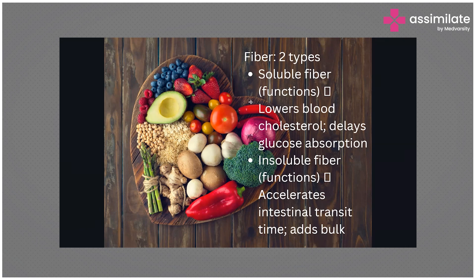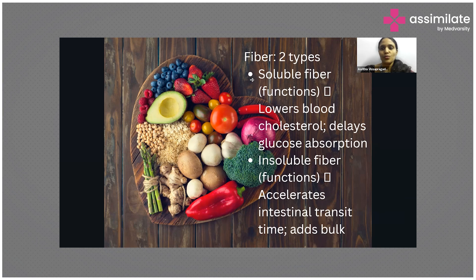Coming to fiber: fiber helps to clean the system. There are two types of fiber we get from our diet — soluble fiber and insoluble fiber. For example, when you take an apple, the pulp is soluble fiber whereas the peel is insoluble fiber. Soluble fiber helps in the absorption of water once food is digested and enters the intestine.